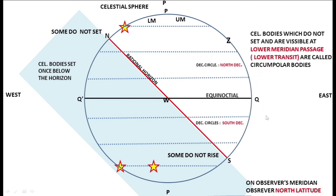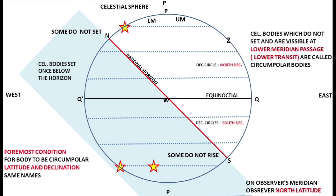Your meridian is referred to as the upper meridian and the one which is 180 degrees opposite is called the lower meridian. Celestial bodies which do not set and which you can see at both meridian passages — lower and upper — are called circumpolar bodies. In navigation, we refer to circumpolar bodies only if you are able to see them even when they are on their lower meridian. This is the only body which is not setting, and this is the body which did not rise.